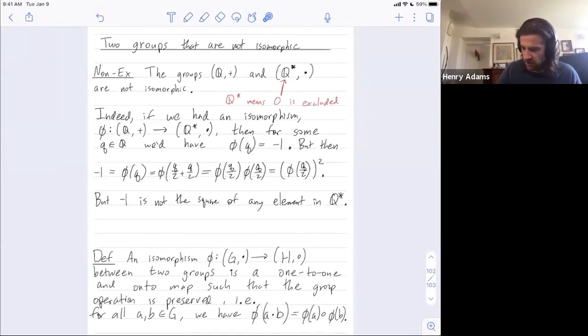So sure, negative 1 is the square of i in the complex numbers, but we're trying to get an isomorphism to this group, Q star, not to anything in the complex numbers. So hence, no such isomorphism exists.